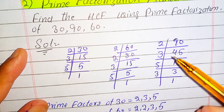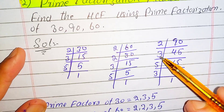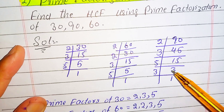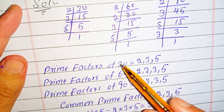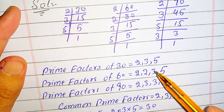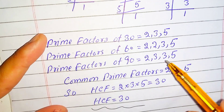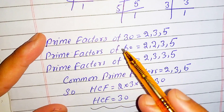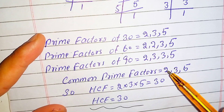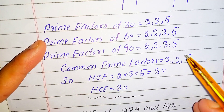Now we do the prime factorization of 90. 2 times 45 is 90, 3 times 15 is 45, 5 times 3 is 15, and 3 times 1 is 3. So the prime factors of 30 are 2, 3, and 5. The prime factors of 60 are 2, 2, 3, and 5. The prime factors of 90 are 2, 3, 3, and 5. Now we look for the common factors of these three numbers, which are 2, 3, and 5.